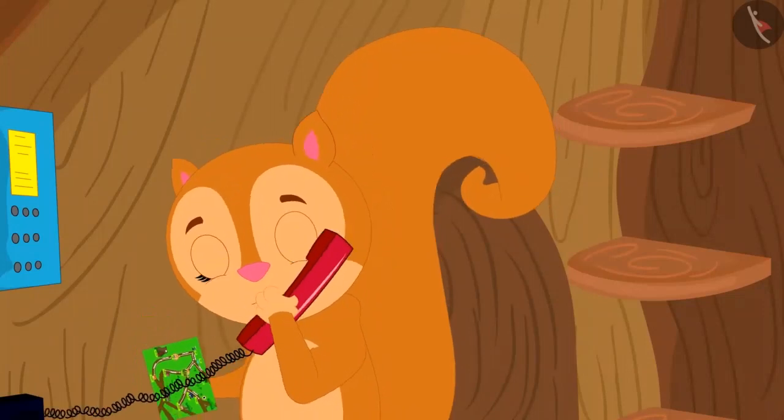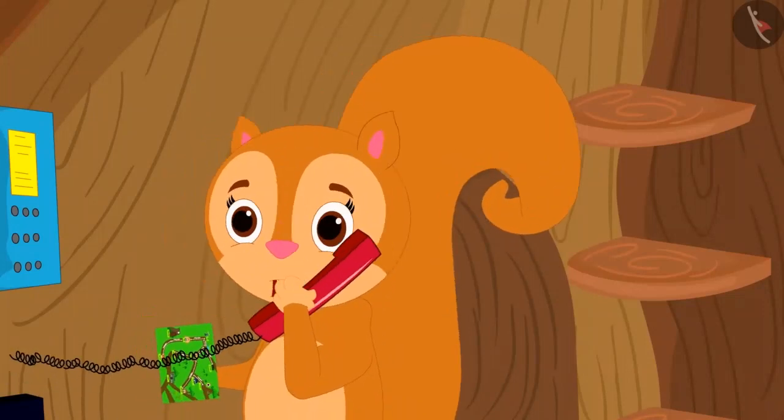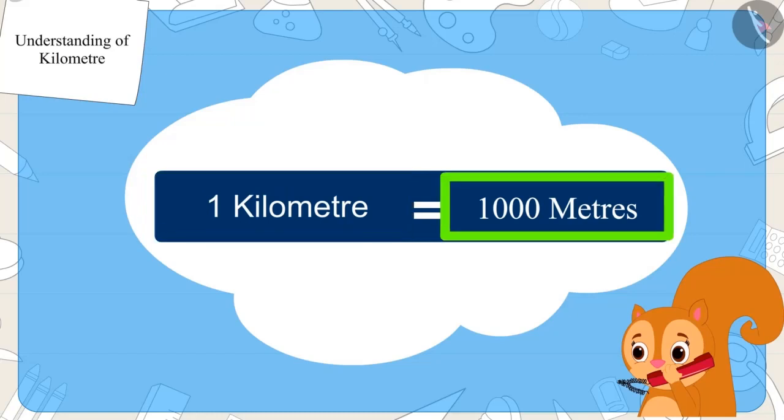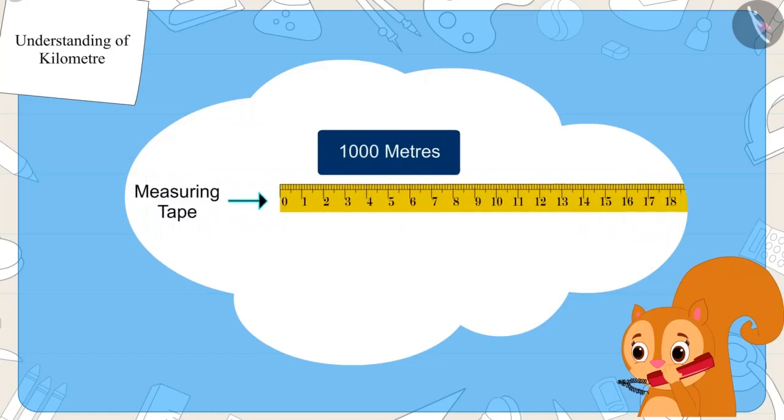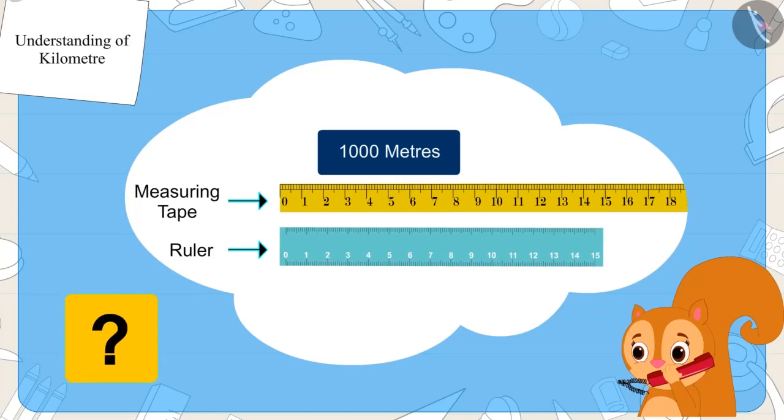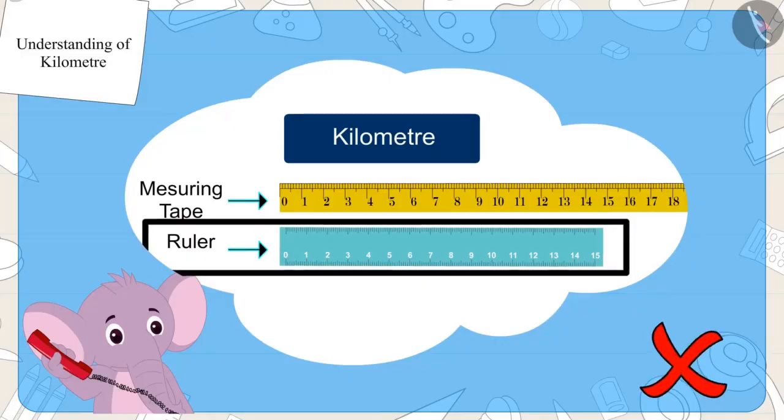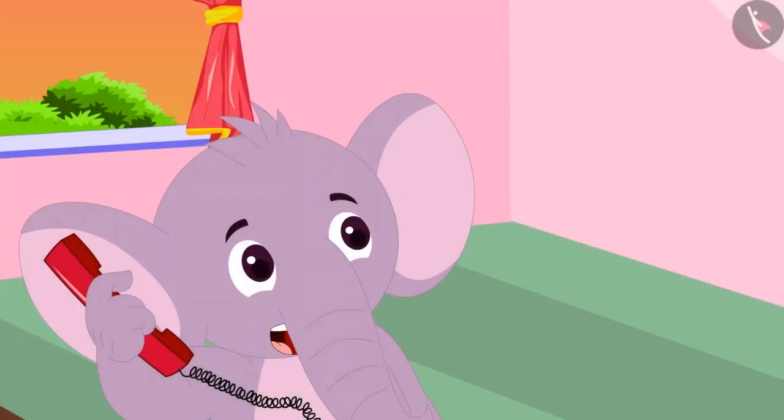Chanda said to Appu, But Appu, if one kilometer is equal to 1,000 meters, then we will not be able to measure it with a measuring tape or a ruler. So how can we measure the distance between two places? You cannot measure a kilometer with a measuring tape or a ruler. Special resources are used for this.